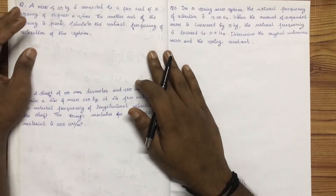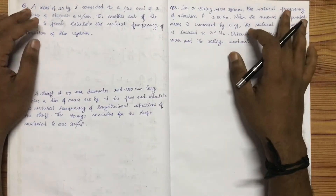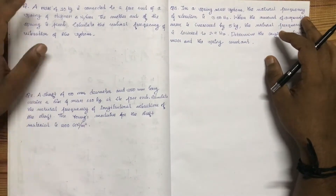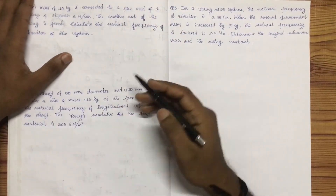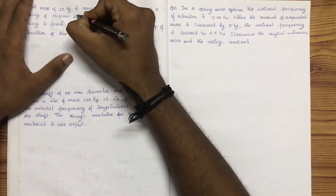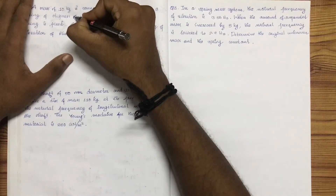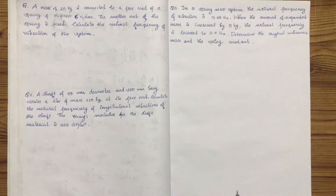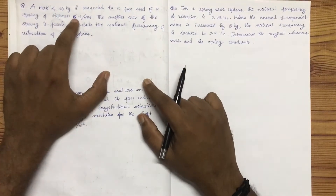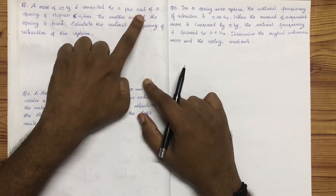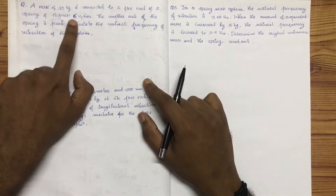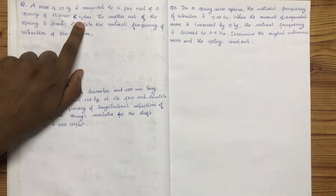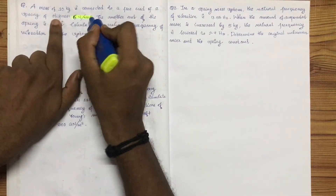This is a university question. We have a different type of question. A mass of 10 kg is connected to a free end of a spring. The stiffness of the spring is 6 N/mm.